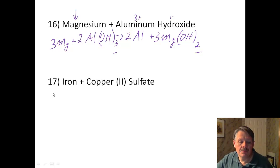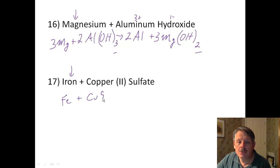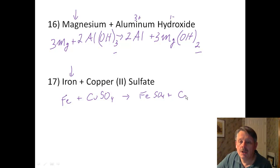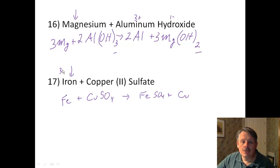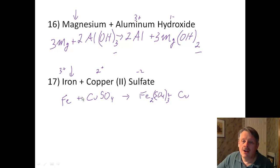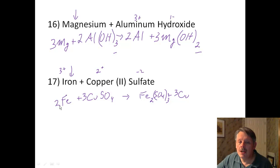Number 17: iron and copper(II) sulfate. Iron is higher on the activity series than copper, so iron replaces copper. Fe plus copper sulfate gives iron sulfate plus copper. Iron is typically 3+ and copper is 2+; sulfate is 2−. Over here they cancel for copper sulfate, but for iron sulfate (Fe₂(SO₄)₃) they don't. I put a 3 in front of copper sulfate, giving 3 coppers and 2 irons, and I am now balanced.